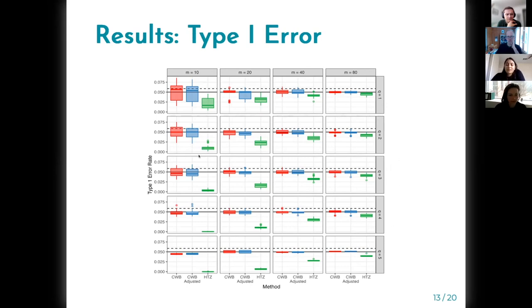The green one is HTZ and you can see that it does control type I error rate, but when the number of studies is really low and the number of contrasts is really high, the type I error rate is near zero.